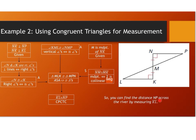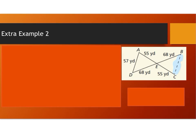So you can find the distance NP across the river by measuring side KL. Here's an extra example 2 with actual measurements. If given a situation to indirectly measure the distance across a body of water, use a proof to show that the triangles are congruent, and then draw conclusions about the measurement — in this case the measurement of BC. Pause the video, try this one out, write the proof, and then tell me your conclusions about the length of BC.